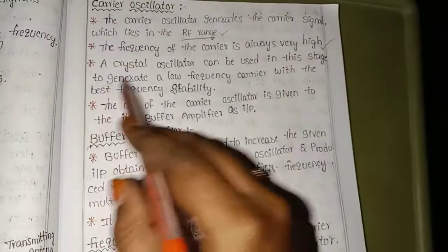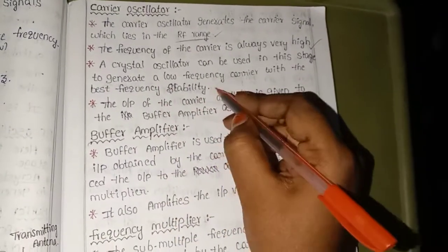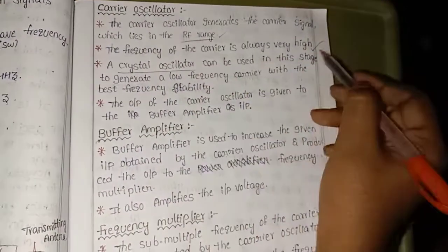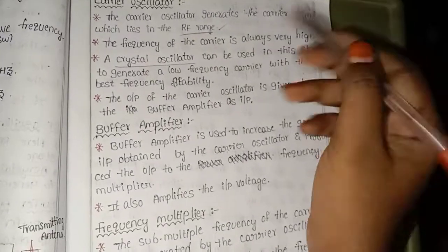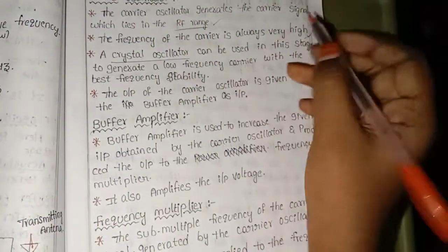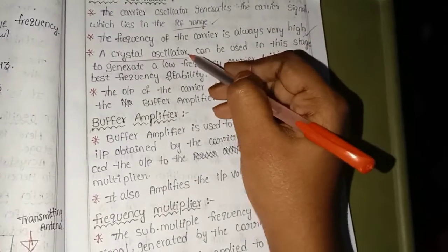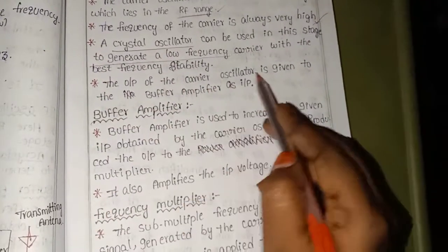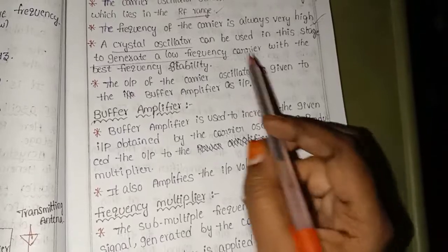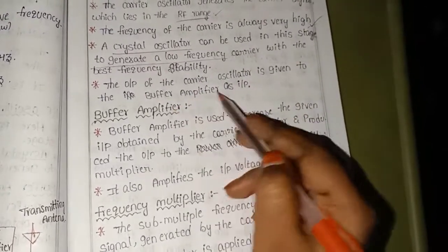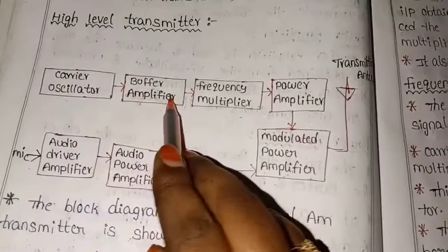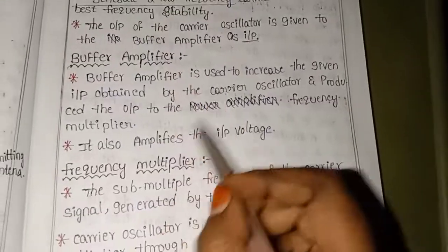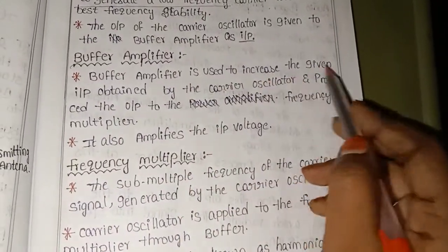A crystal oscillator can be used in this stage to generate a low frequency carrier with the best frequency stability. The output of the carrier oscillator is given to the buffer amplifier as input. The buffer amplifier is used to increase the given input.